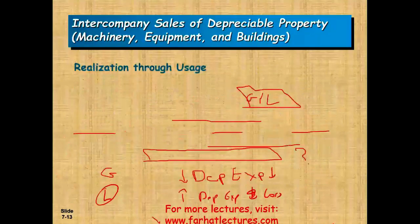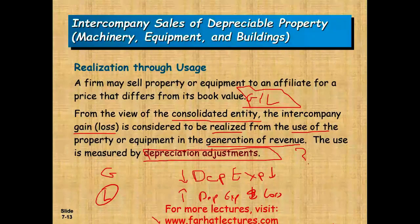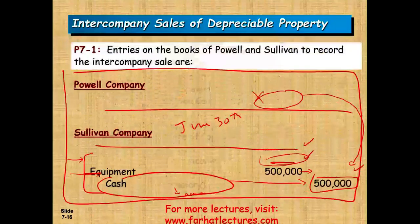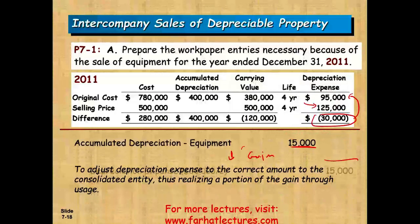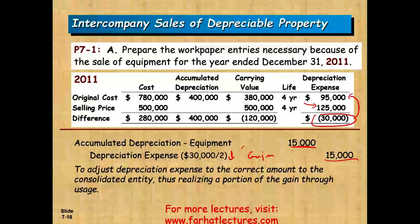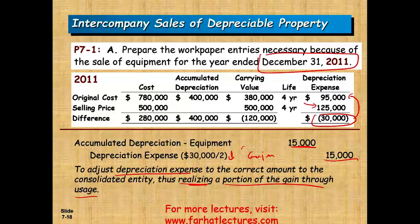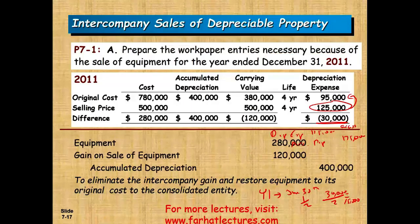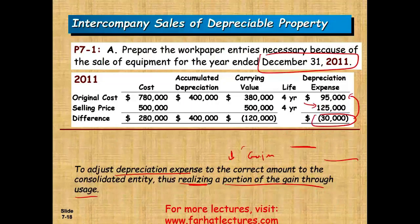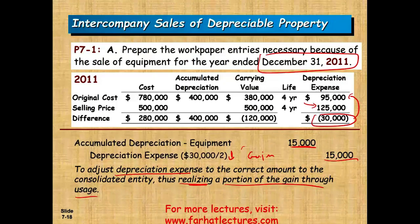This is what we meant by realization through usage — as we adjust depreciation, we recognize some of the gain. To adjust depreciation expense to the correct amount, we are realizing a portion of the gain through usage. So these are all the entries needed in 2011: eliminate the gain, restore the asset, restore accumulated depreciation, then book the depreciation adjustment entry. Since we had a gain, we reduce depreciation expense by crediting it.